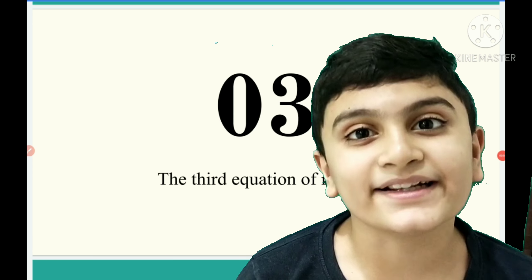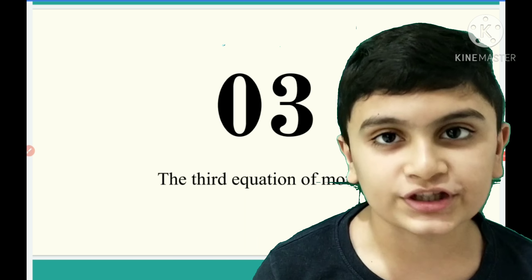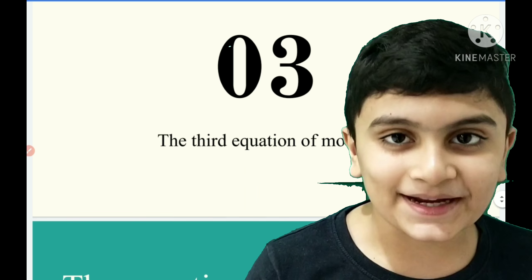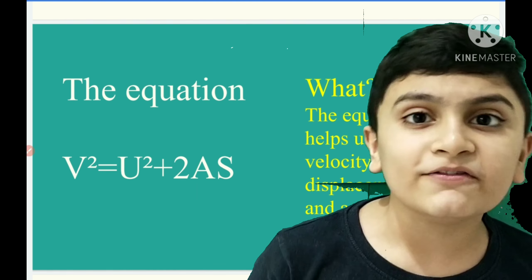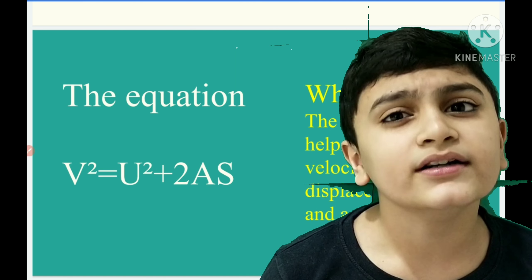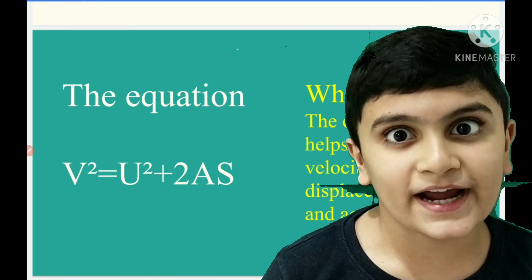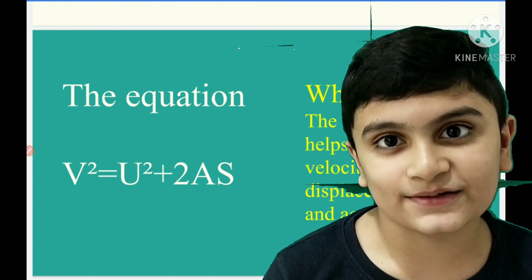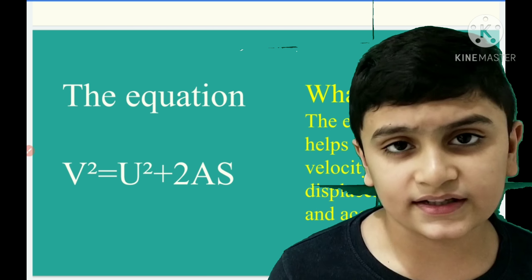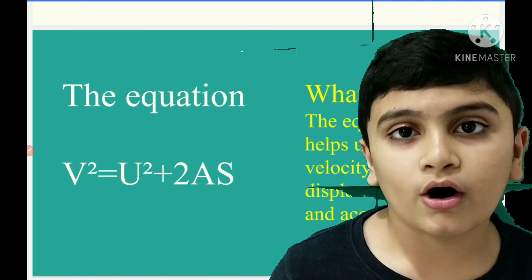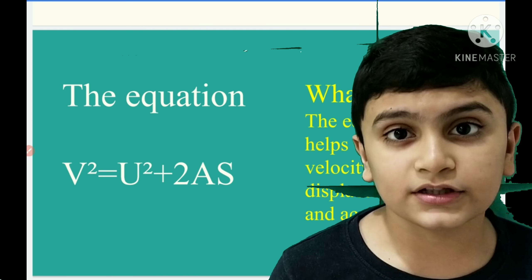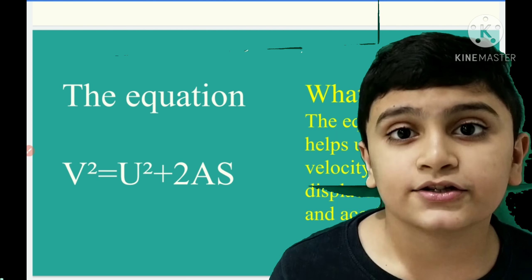This is the third and last equation of motion. It is a simple equation. It gives us the final velocity from initial velocity, acceleration, and — as you might be wondering — the last term is not time, it is displacement. A bit different from the first one. The equation is V squared is equal to U squared plus 2AS.